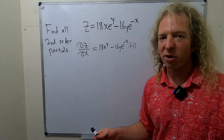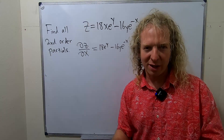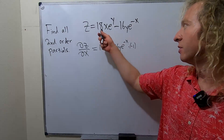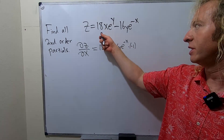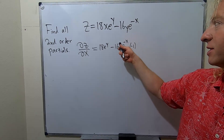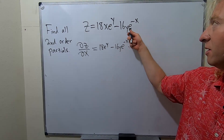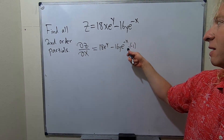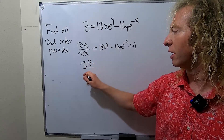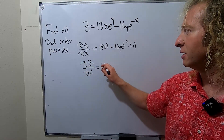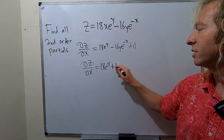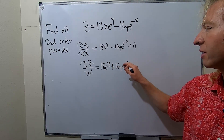Let's check this. We took the partial with respect to x, so all of the y's are constants. This derivative is 18. This hangs out because it's a constant. This derivative is e to the negative x times negative 1. So del z del x is going to be 18e to the y plus 16y e to the negative x.